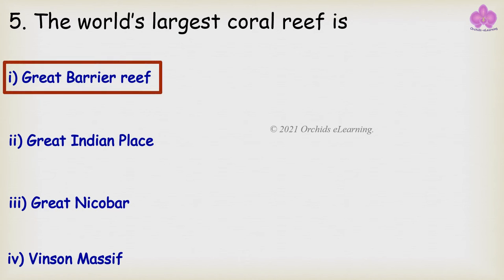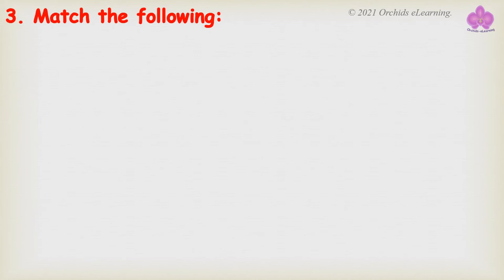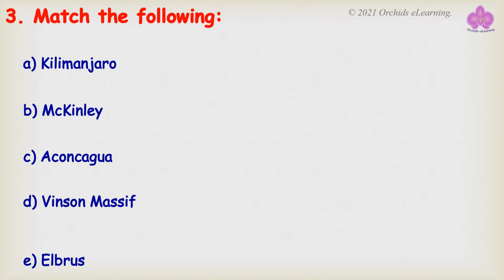Australia. The Amazon River lies in South America. The world's largest coral reef is the Great Barrier Reef. Match the following: Look at the options in Column A and Column B.